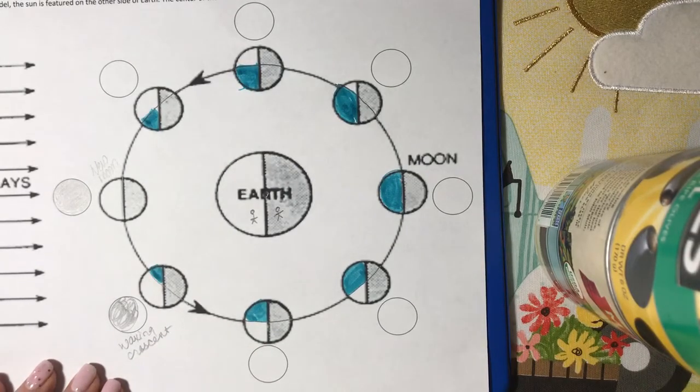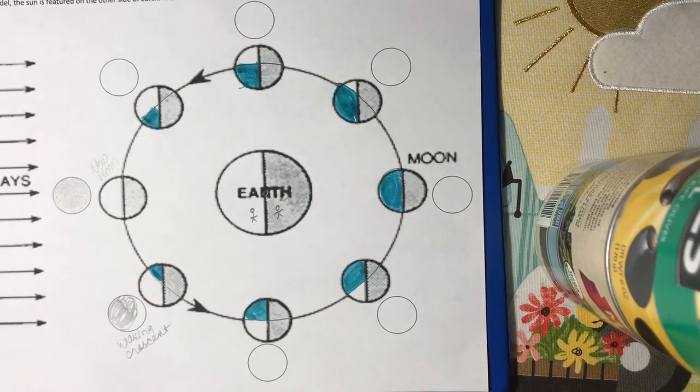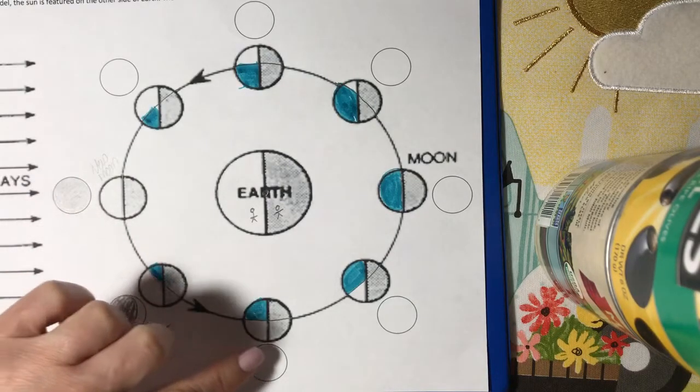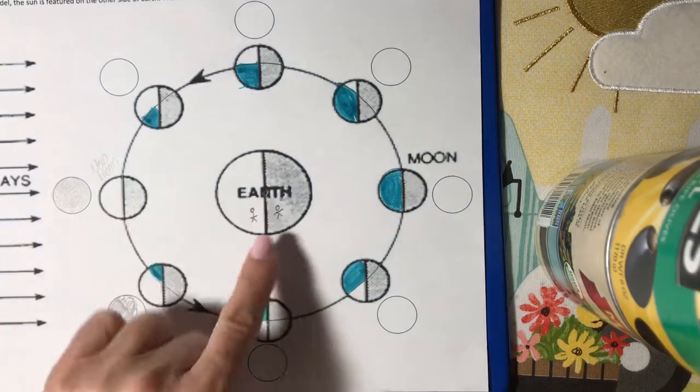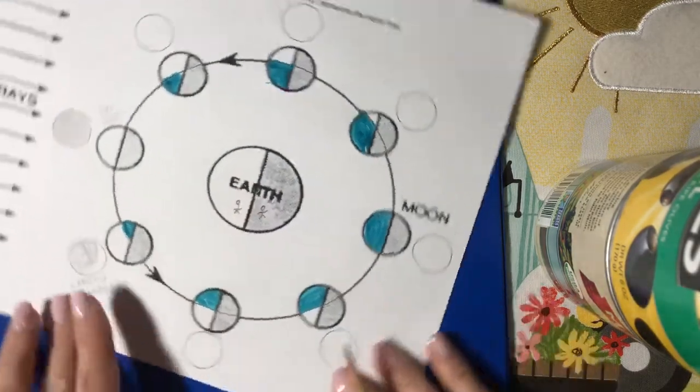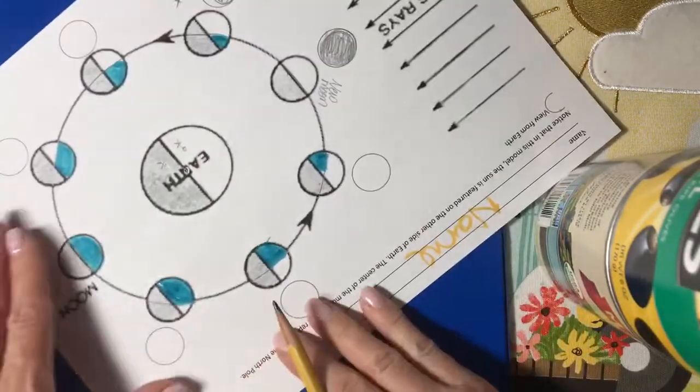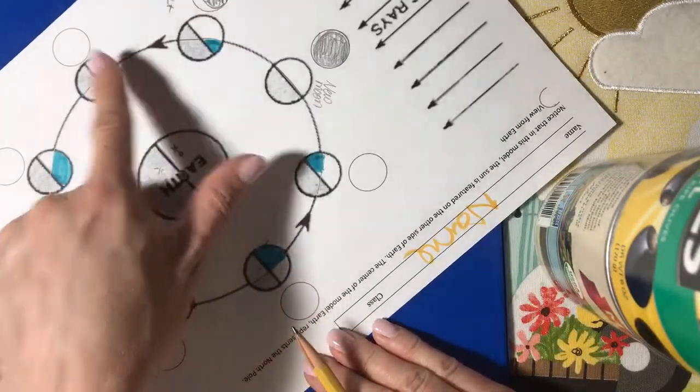The word waxing means it's getting bigger on the right hand side. So if you watch, the moon seems to be growing on the right hand side. So again, if I'm here and I'm looking here, turn my paper around, I notice that's the right hand side.